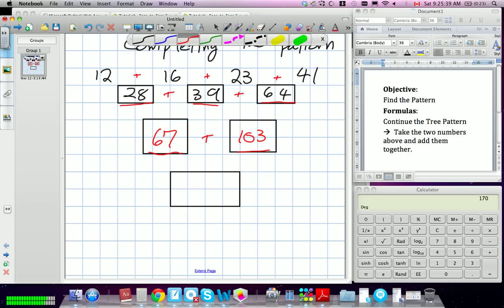So the idea to this pattern is whatever two numbers are on top, we combine it to make the one below. And we continuously did that. Okay. So it kind of went like that. We'll draw little arrows in green. So we did 12 and 16, you get 28. 16 and 23, you get 39. 23 and 41, you get 64.